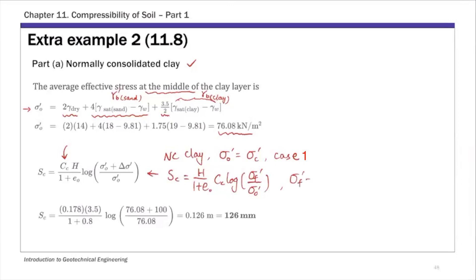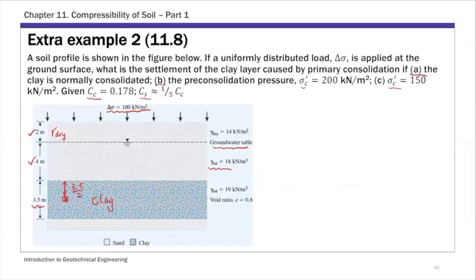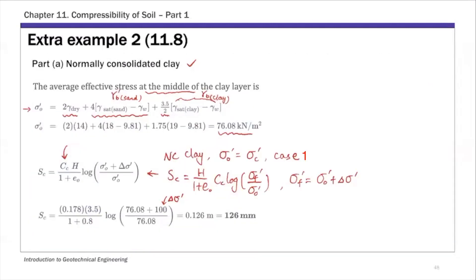Sigma f prime is the initial effective stress plus the surcharge delta sigma prime — that 100 kPa value. Substituting all these values, the primary consolidation settlement for part one is 0.126 meters or 126 millimeters. That's part A — normally consolidated clay.